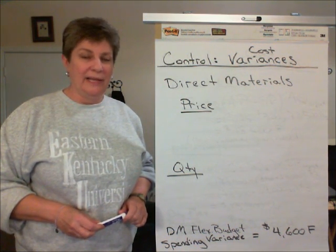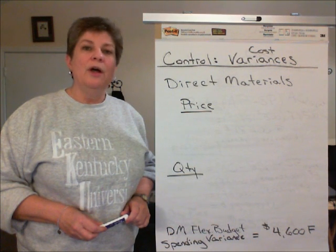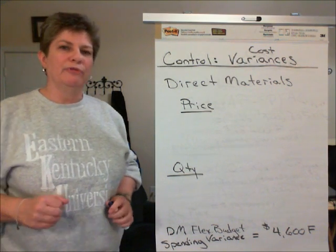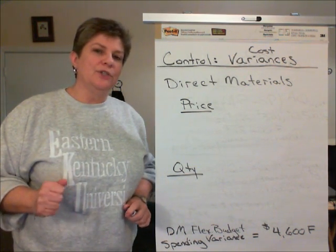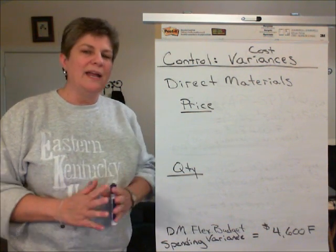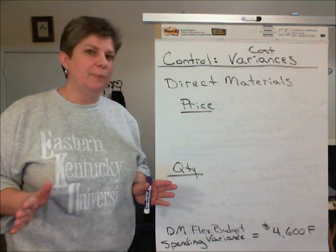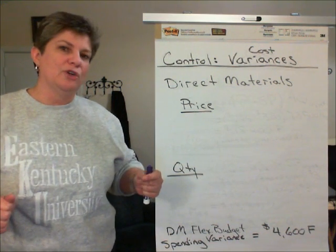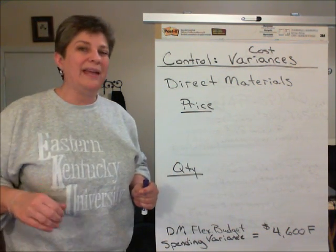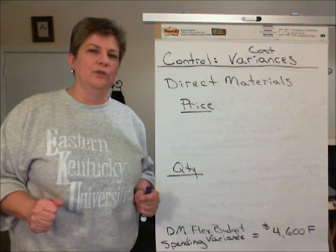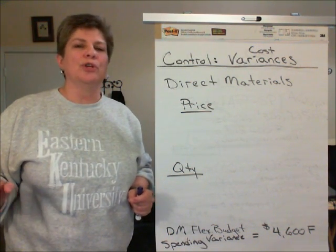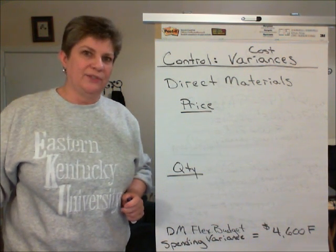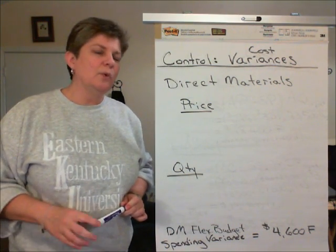Managerial accounting, planning and control, variance analysis. The final step in our performance evaluation is to calculate variances — to break out the flexible budget spending variances on costs into those that are due to actual cost differences, paying more than we should have according to the standard for the inputs, and what portion is from usage, inefficiency, or waste in the use of our resources.